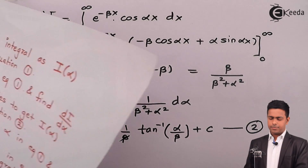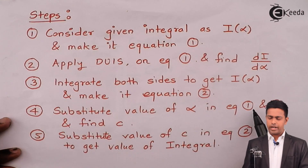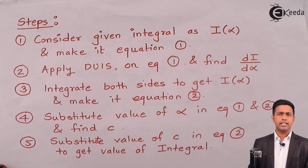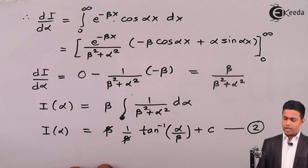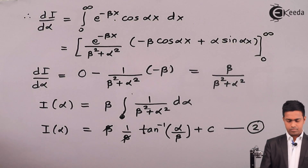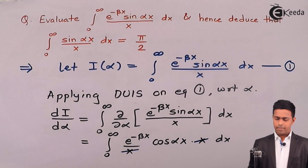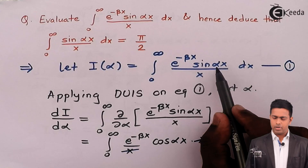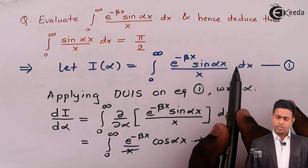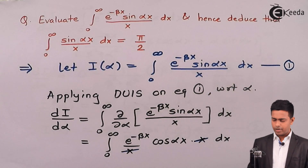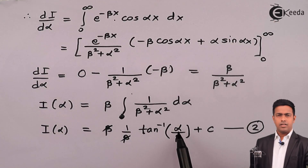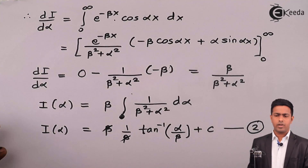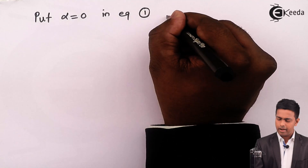After this we have to substitute some value of alpha in equations one and two to find the constant of integration C. We must choose a value of alpha such that the integral evaluates to a finite value. We can put alpha as 0: sin(0) is 0, so the whole term becomes 0, giving I(alpha) = 0 — a finite value. Similarly, putting alpha = 0 on the right hand side gives tan inverse(0) = 0, also finite. So put alpha equals 0 in equations one and two.